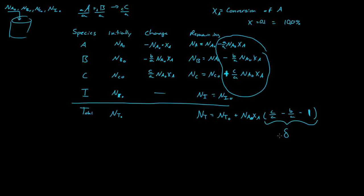So delta tells us the total change in moles in the system per mole of A reacted. That's all delta does. And it's very useful in helping us calculate when we have a change in the volume of the system, or just finding the basic change in the moles of the entire system. So N T is equal to N T naught plus delta N A naught X A. So this is the equation for the remaining moles in the system at some conversion of A.